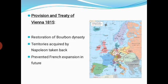The second provision: territories acquired by Napoleon Bonaparte were taken back. That means before 1815, those territories acquired by Napoleon Bonaparte were to be returned. In such a way, France lost its territories. This was the second most important provision of the Treaty of Vienna. The third provision was to prevent France's expansion in the future — the European powers stopped France's expansion.